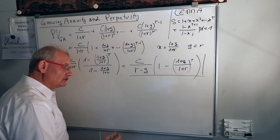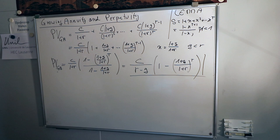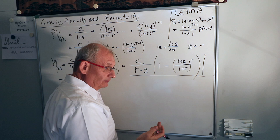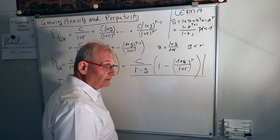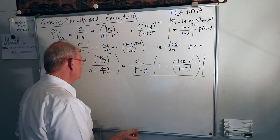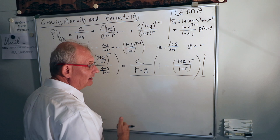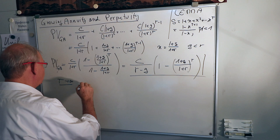To get the growing perpetuity formula, we assume t goes to infinity. With g smaller than r, the ratio (1+g)/(1+r) is less than 1, so it gets smaller and smaller as you raise it to higher powers — like sharing a pizza among more and more people. As t goes to infinity, this term vanishes, and the present value of the growing perpetuity equals c divided by (r minus g).